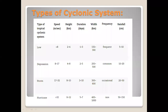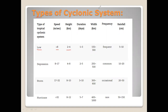Now let's discuss types of cyclone systems. Low cyclones have a speed of 8 km per second, a height of 2 to 4 km, a width of 150 to 300 km, and they bring rainfall of 5 to 10 cm. Such cyclones are called low cyclones.